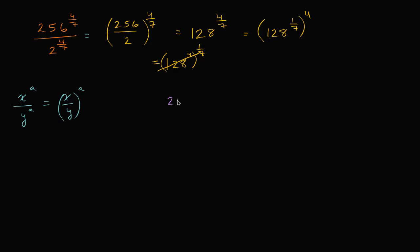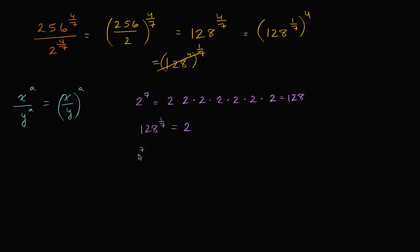Two to the first is 2, times two is 4, times two is 8, times two is 16, times two is 32, times two is 64, times two is 128. So two to the seventh power is equal to 128. Another way of saying this is that 128 to the one-seventh power is equal to two — or equivalently, the seventh root of 128 is equal to two.